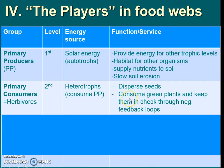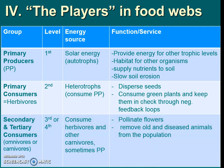Primary consumers disperse seeds, consume green plants, and keep green plants in check by eating them. Secondary and tertiary consumers are usually omnivores or carnivores that consume those herbivores. If they're omnivores, they might also eat some plants. Sometimes these things pollinate flowers, and sometimes they will remove old and deceased things from the environment if they are scavengers like vultures.